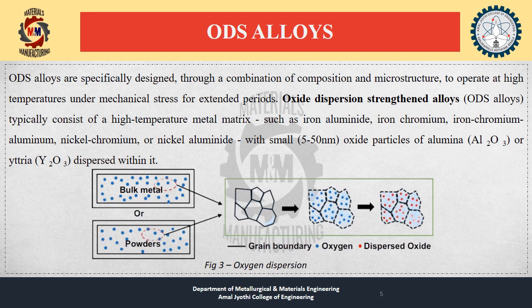ODS alloys are specifically designed. They are a combination of a high-temperature metal matrix as well as oxide particles. The oxide particles may be mainly alumina or yttria (yttrium oxide). The bulk metal and the powders are mixed together, oxide dispersion takes place, and oxygen gets dispersed into the metal matrix — that is what happens when ODS alloys are produced.